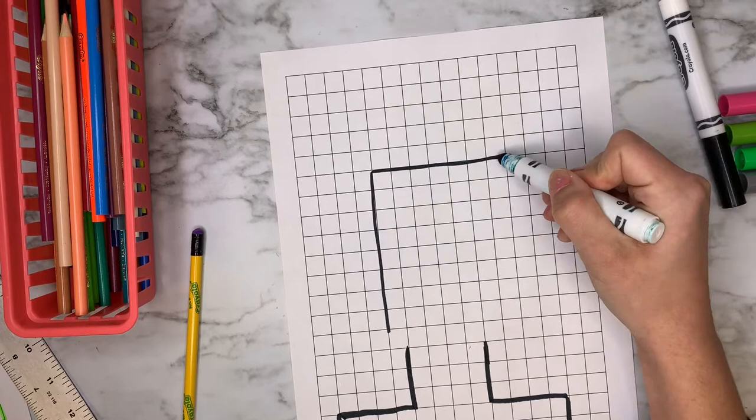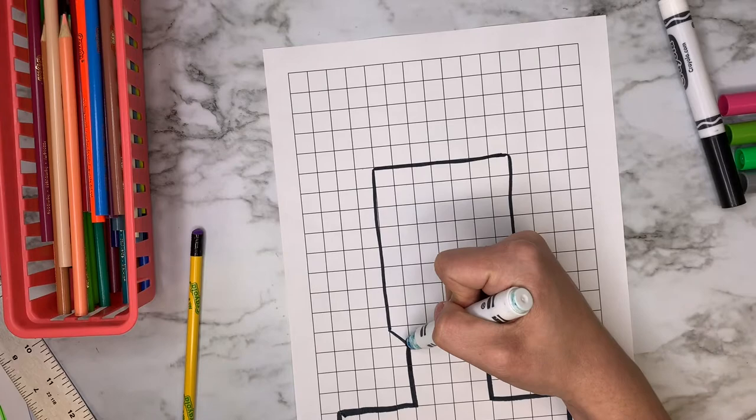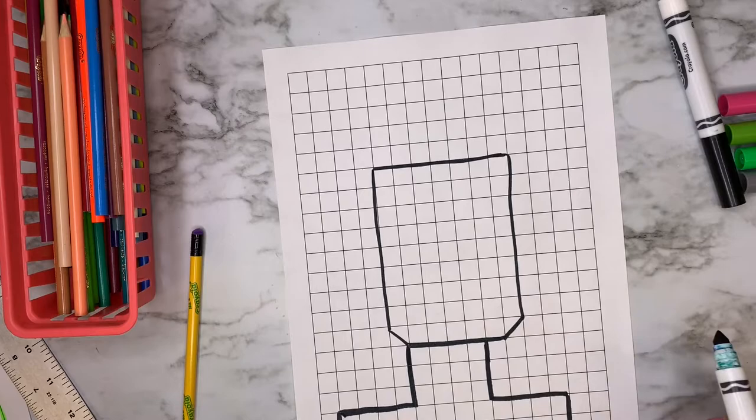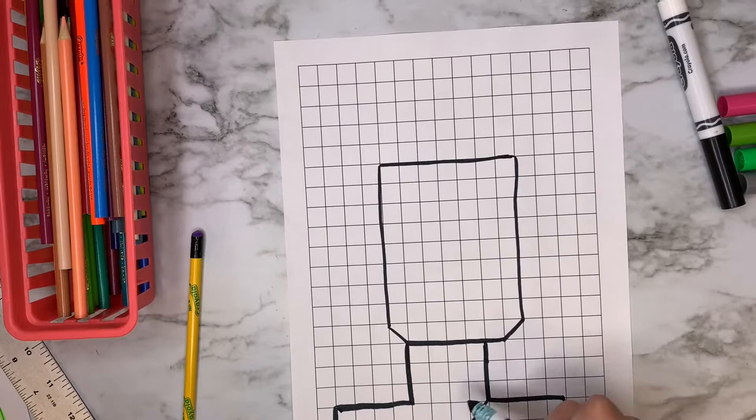So now I need to finish off my neck and I'm going to do a diagonal line. And then I'm going to just connect all of this together. So now you should have your head, your neck, and your shoulders. I'm going to add some more diagonal lines right here so that you can see my shirt.